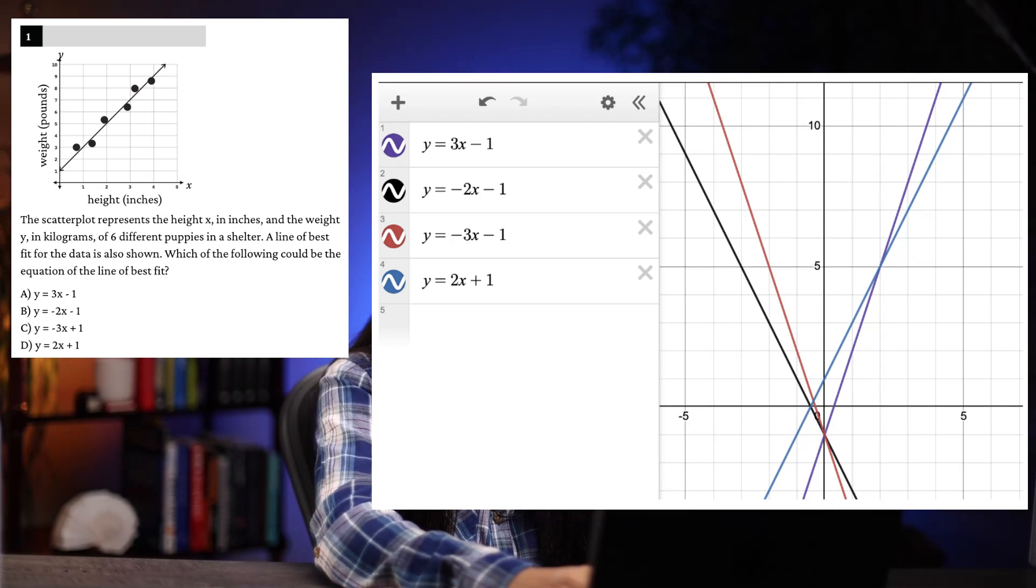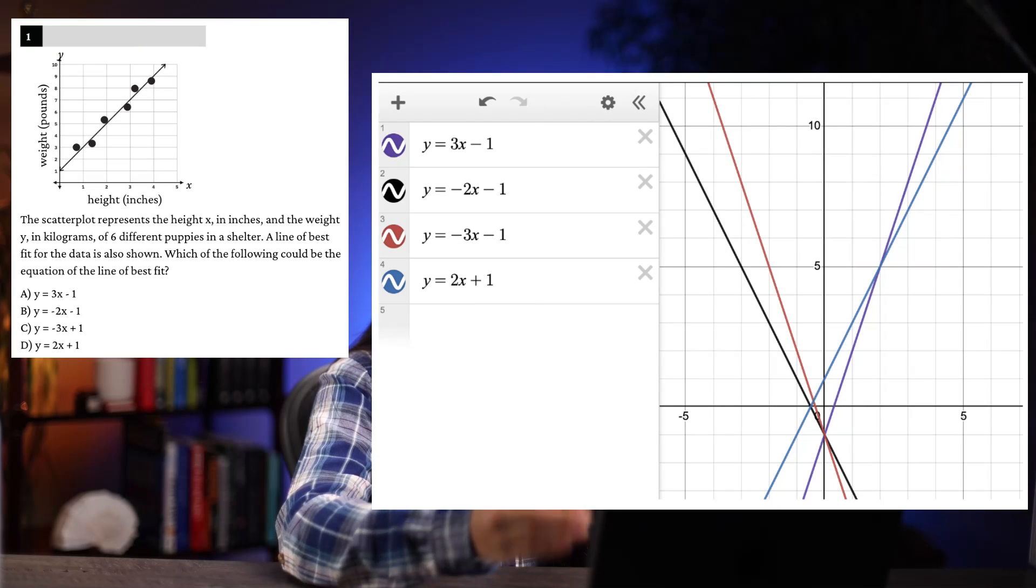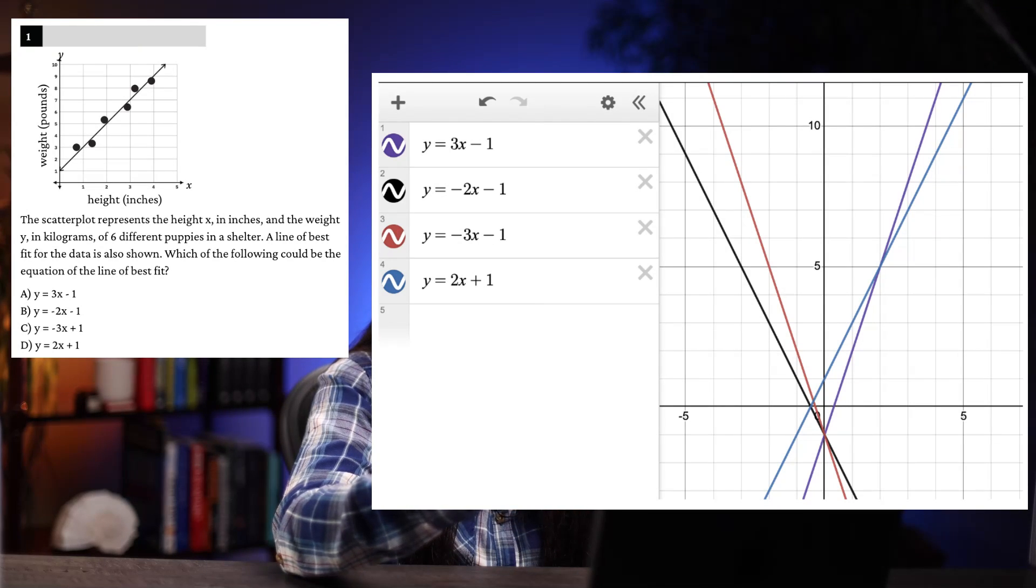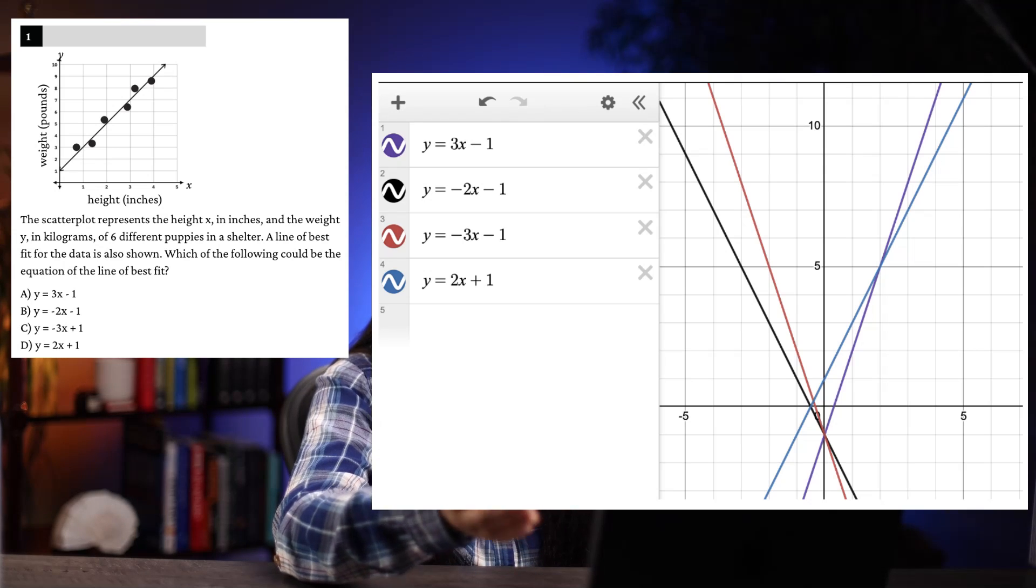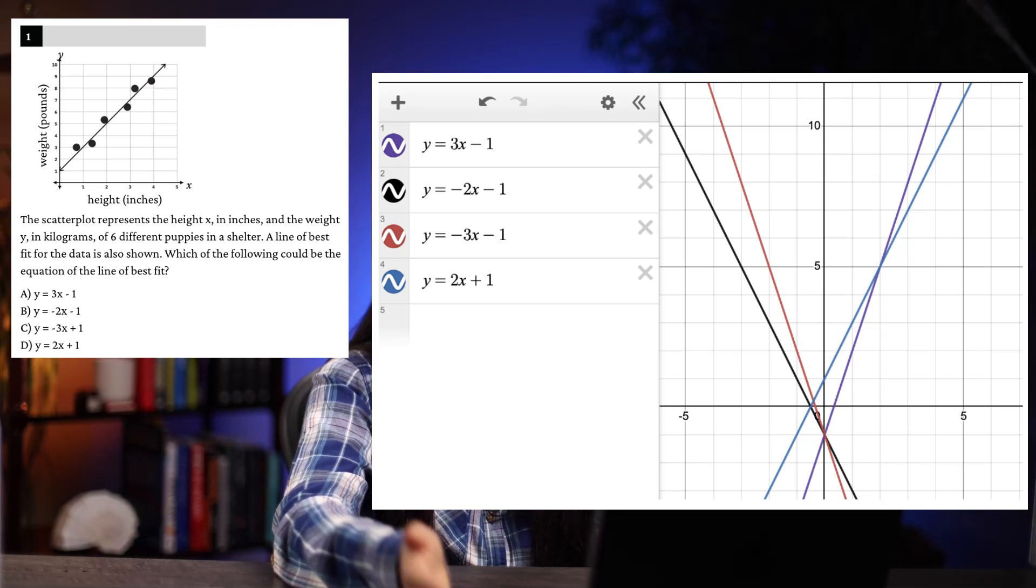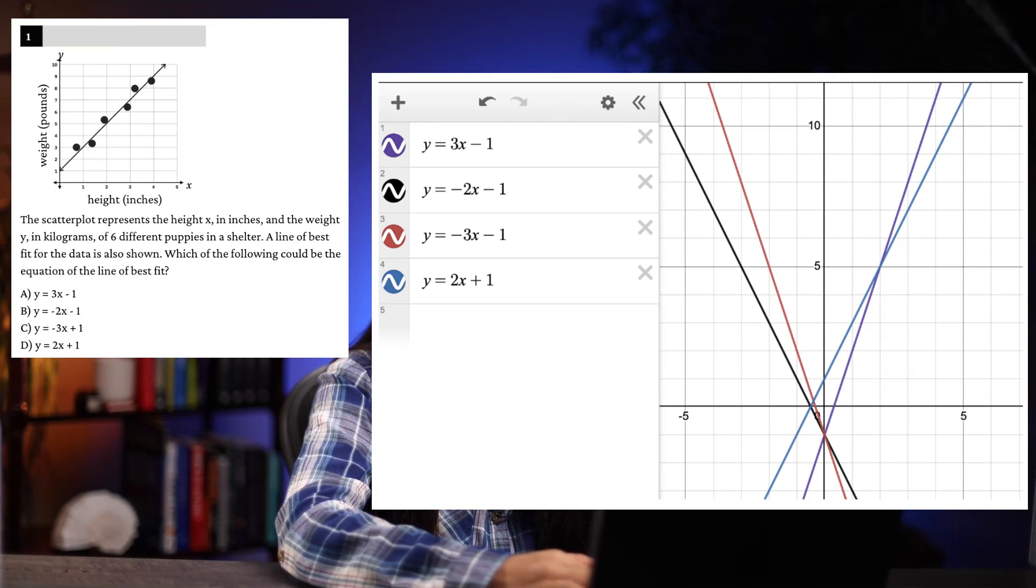So if we plug in Y equals 3X minus 1, Y equals negative 2X minus 1, Y equals negative 3X minus 1, and Y equals 2X plus 1, we can see that Y equals negative 3X minus 1 is incorrect. Y equals negative 2X minus 1 is also incorrect. So now we're between Y equals 3X minus 1 and Y equals 2X plus 1. And if we compare the lines and the Y intercepts, we can clearly see that Y equals 2X plus 1 is the correct answer here.